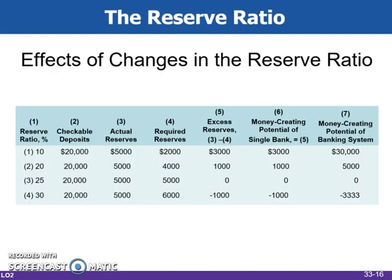In addition to open market operations, the Fed has three other tools available. The Fed can change the reserve ratio, which will affect the ability of commercial banks to lend. If the reserve ratio is increased, the money multiplier will decrease, and vice versa. This table shows that a change in the reserve ratio affects the money creating ability of the banking system as a whole in two ways.